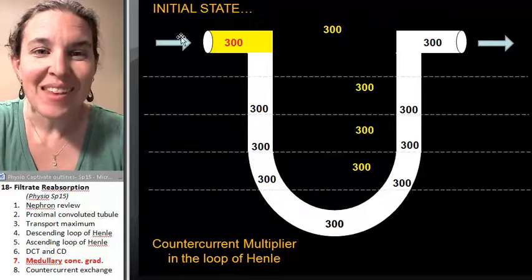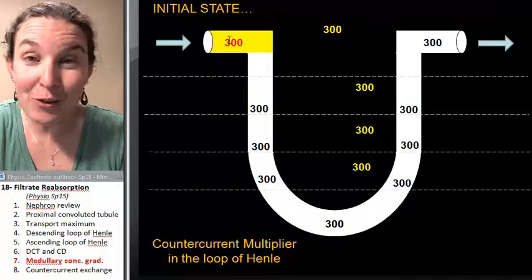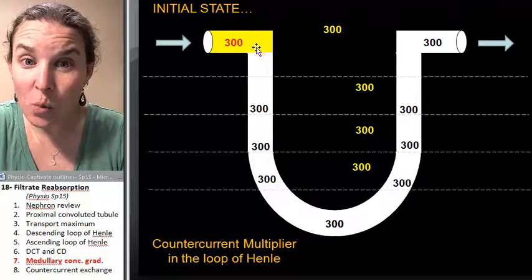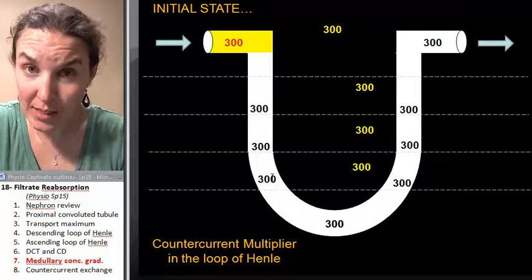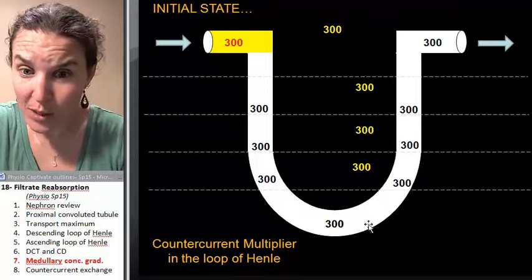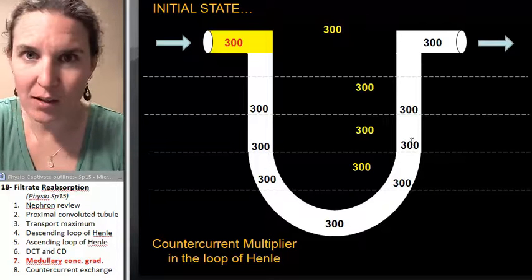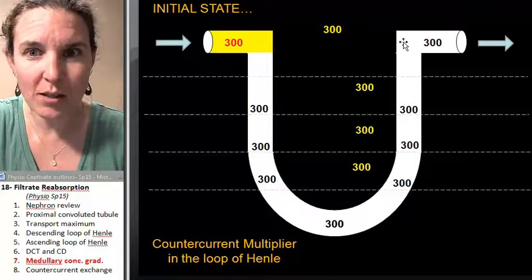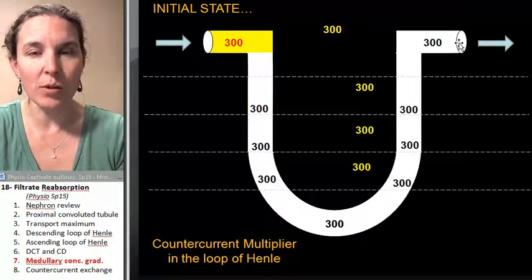Please notice, this is proximal convoluted tubule, which means what is this? Descending loop of Henle, which means what is this? Ascending loop of Henle, which means what is this? Distal convoluted tubule.